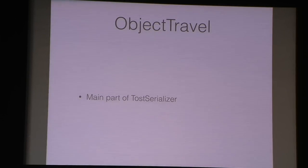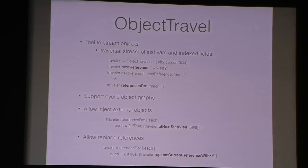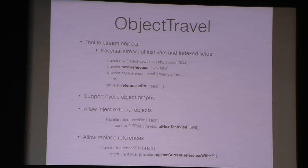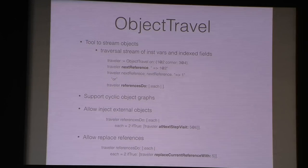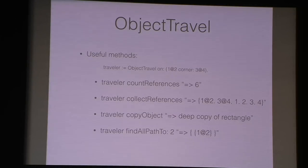The TOSP serializer is based on Object Traveler, another project which provides streaming capabilities over object graphs by native references. It supports cyclic graphs, allows injecting extra objects into a given object stream, and supports replacing references during traversal, providing some nice features on top of this.